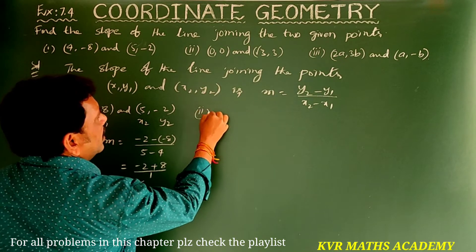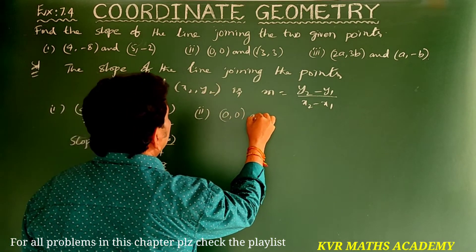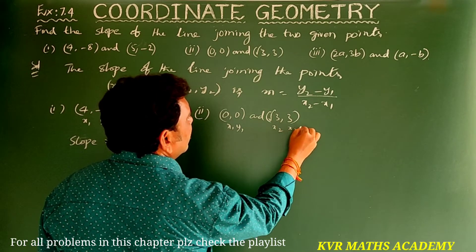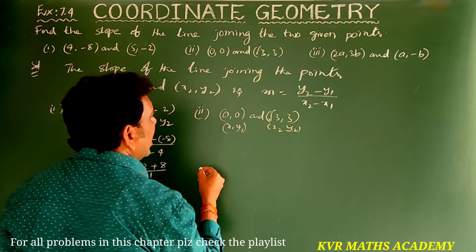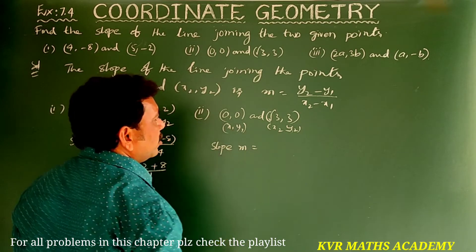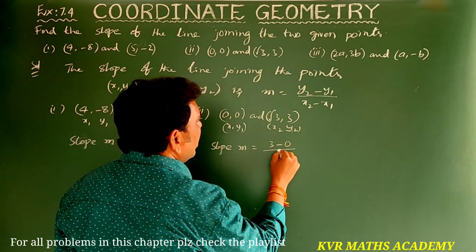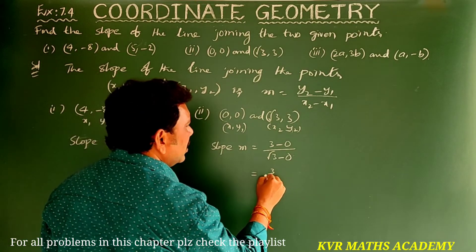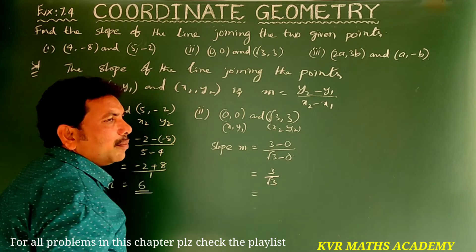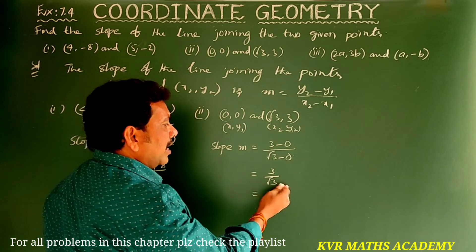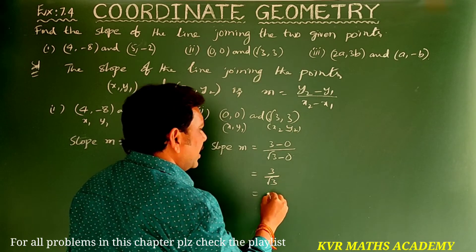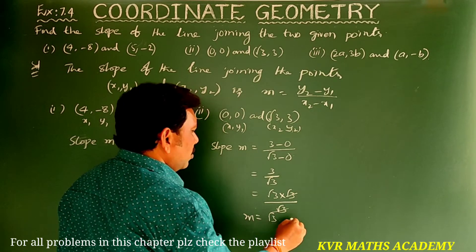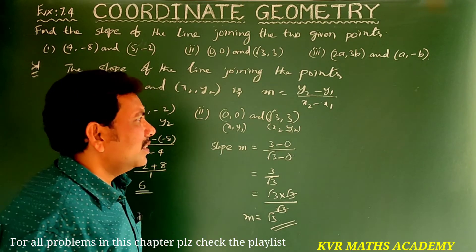Second one: given points are (0, 0) and (√3, 3). These are x1, y1 and x2, y2. Slope m = (3 - 0) / (√3 - 0) = 3 / √3. Rationalizing, 3 can be written as √3 × √3, so √3 × √3 / √3 = √3. Slope m is equal to √3.